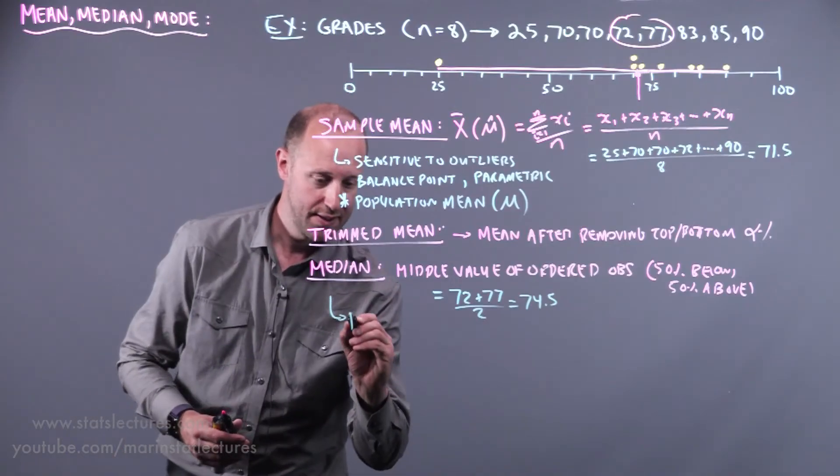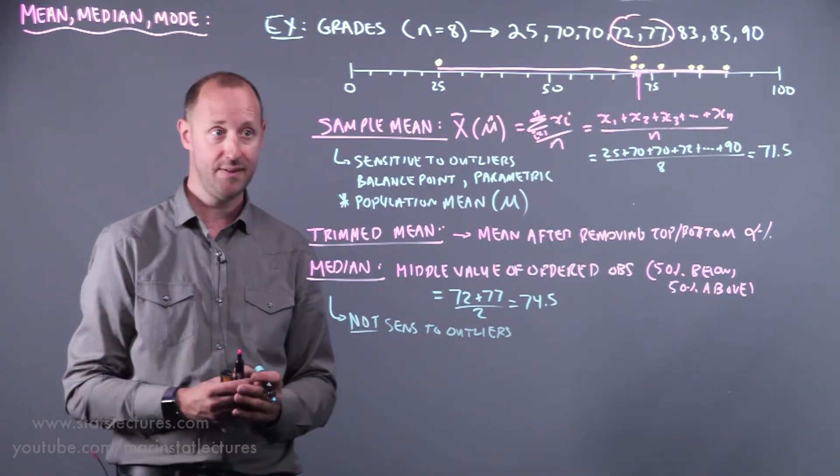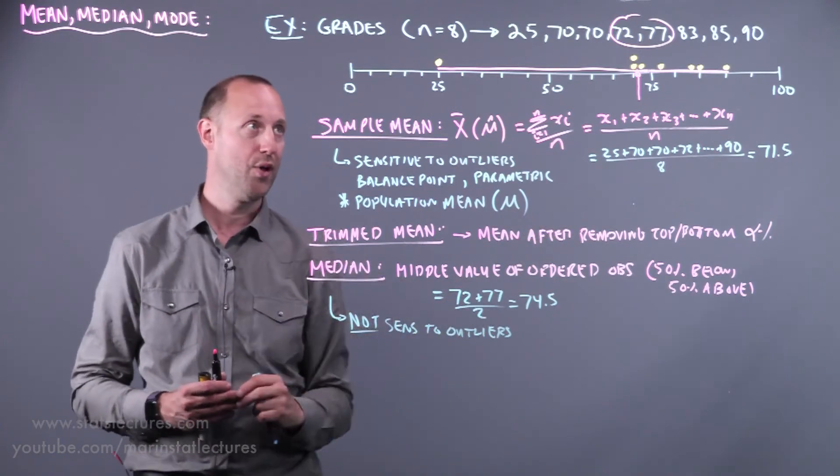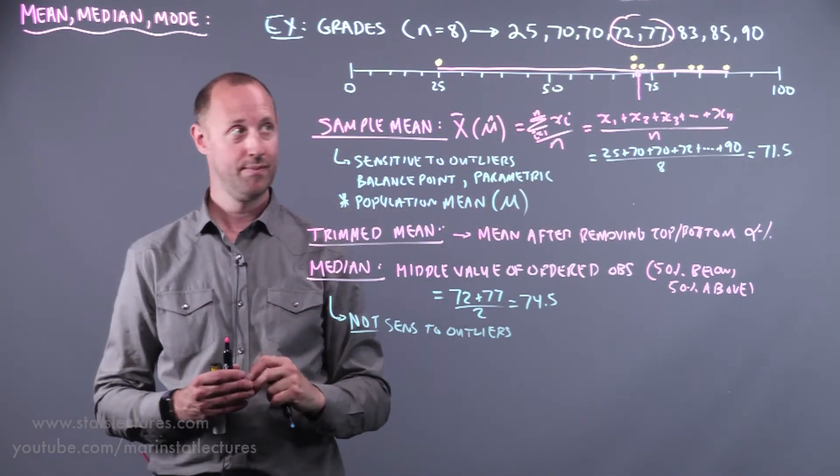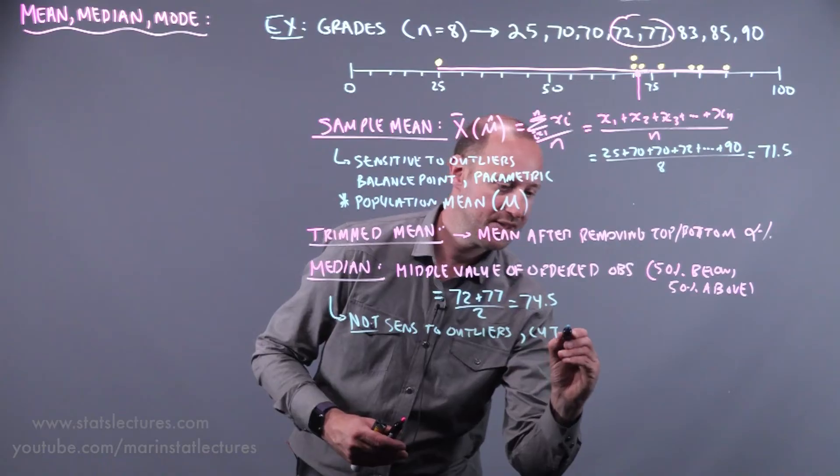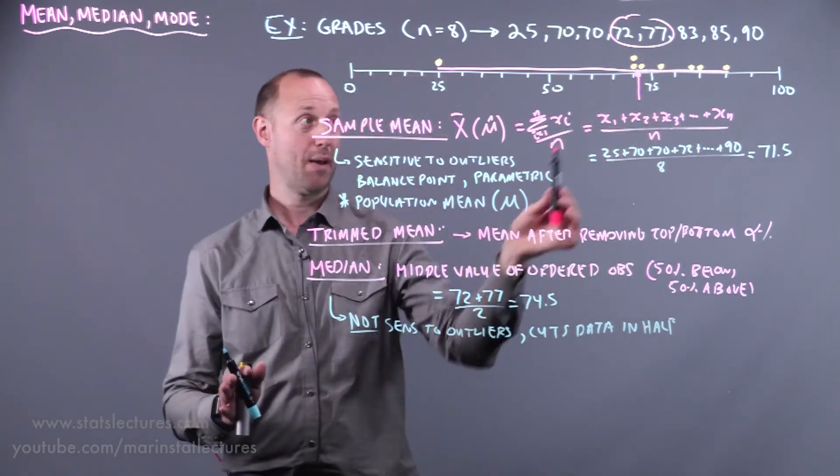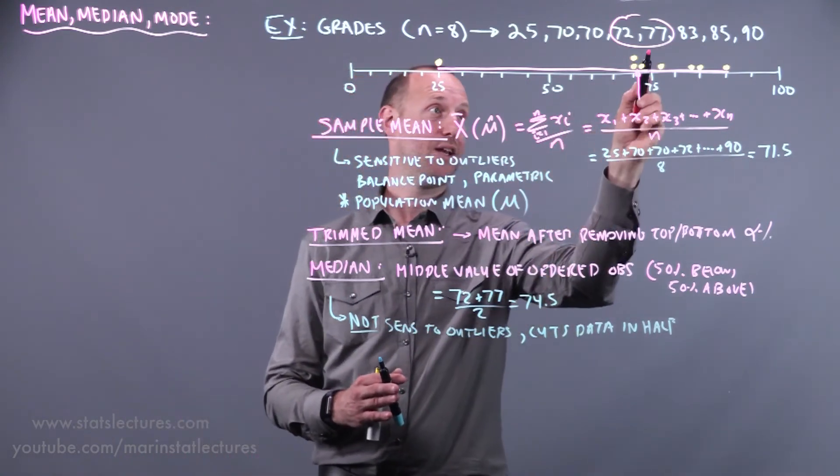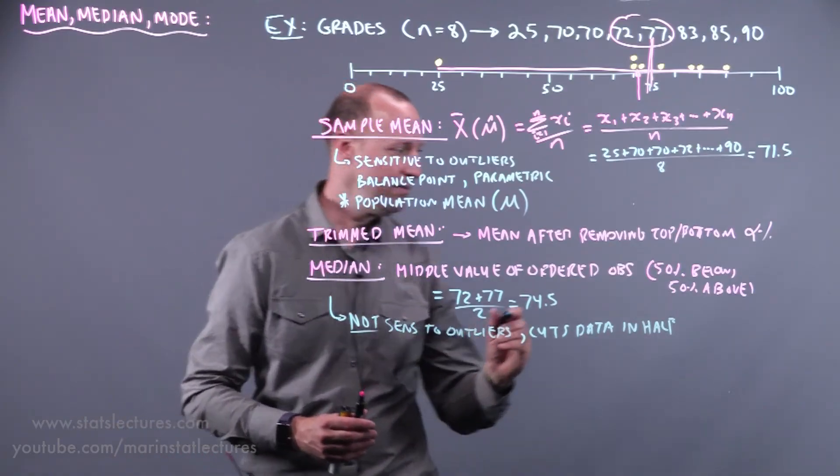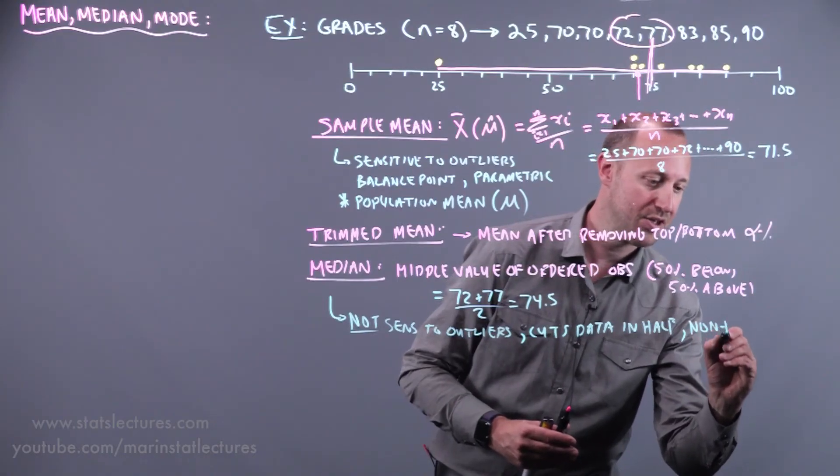Some important things to note about the median. The first is that it is not sensitive to outliers. Here, sometimes it gets called robust. If this grade of 25 changed and was 15, the median won't change. The mean will. The mean will get pulled lower. And if this grade of 25 was 0, the median is still the same. So it's not sensitive to outliers or extreme values. What it does is it cuts the data in half. So again, as noted before, the mean is more like a balance point, trying to find what point balances the data out. The median is what cuts it half below, half above. And again, another word that doesn't have much meaning now, but will slowly take on meaning as we progress through ideas. The median is a non-parametric measure.